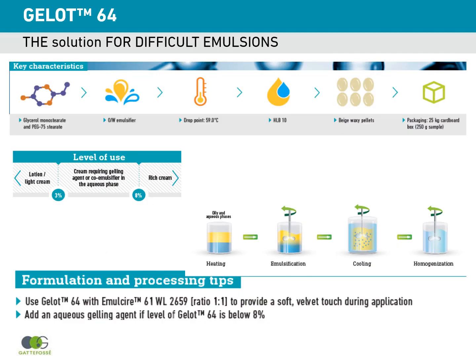I would like to finish this presentation by introducing GELOT64, the second emulsifier, which is really the solution for difficult emulsions. GELOT64 is a mixture of two ingredients: glycerol monostearate and PEG-75 stearate. It is an oil-in-water emulsifier with a drop point of 59 degrees, an HLB of 10, and it comes as beige pellets.